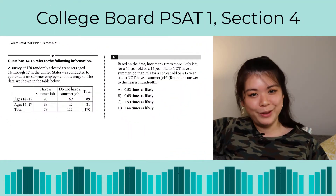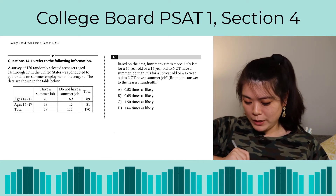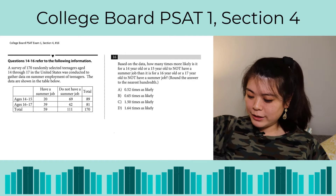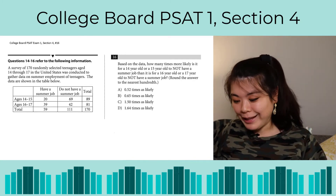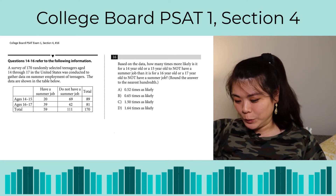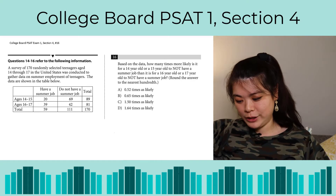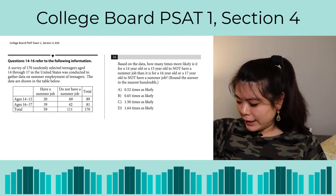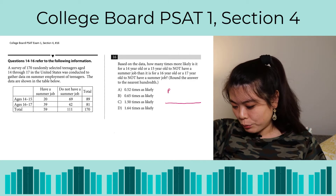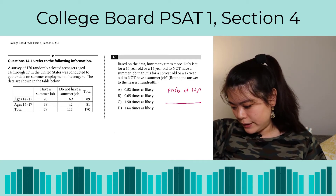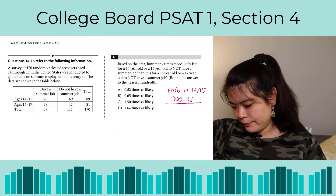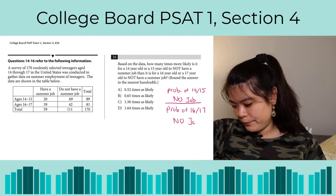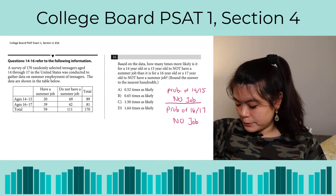Here's the next question. This one's a little bit different — it's going to be a probability question. On the left side we have a table representing two different age groups, 14 to 15 and 16 to 17, and whether they had a summer job. The question asks: based on the data, how many times more likely is it for a 14 or 15-year-old to not have a summer job than it is for a 16 or 17-year-old to not have a summer job? I'm going to translate this as a fraction: up top is the probability of 14–15 not having a job, and on the bottom is the probability of 16–17 not having a job.